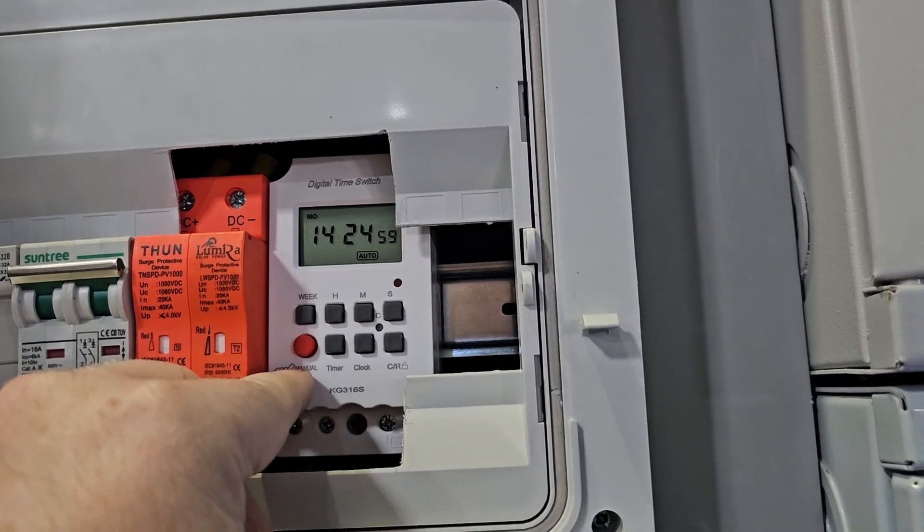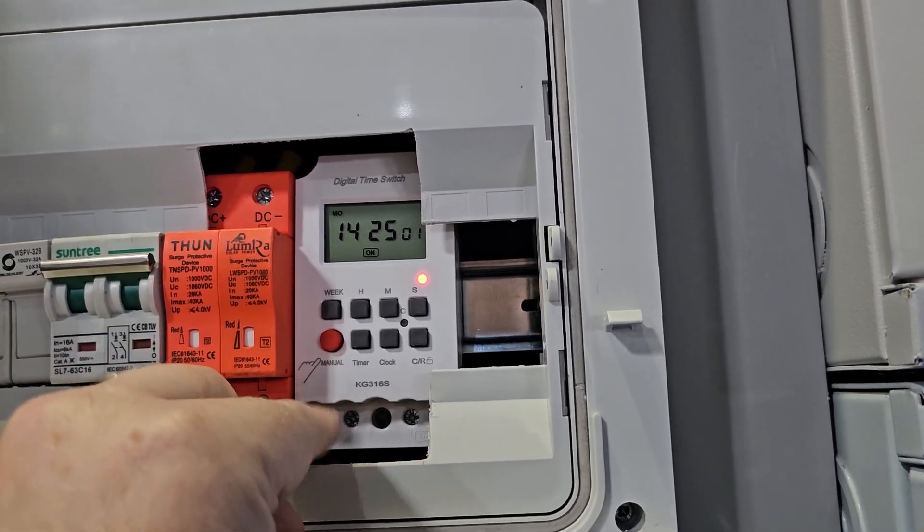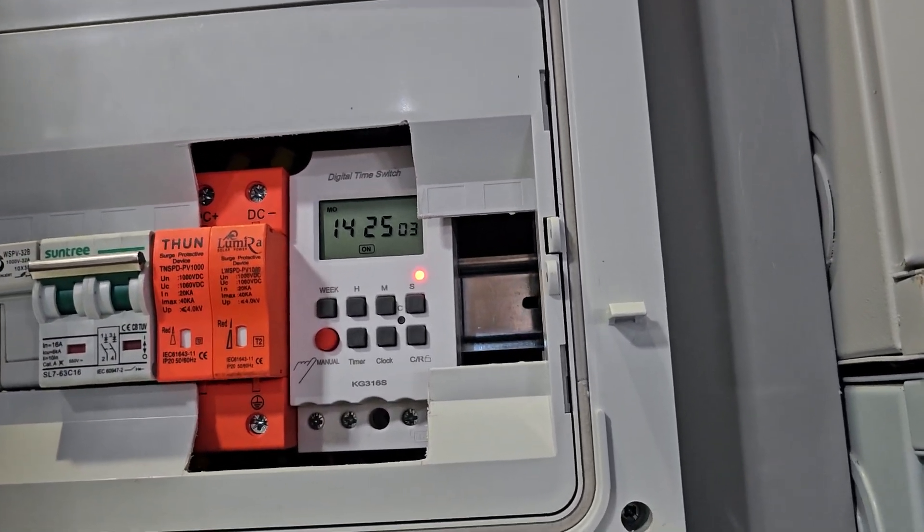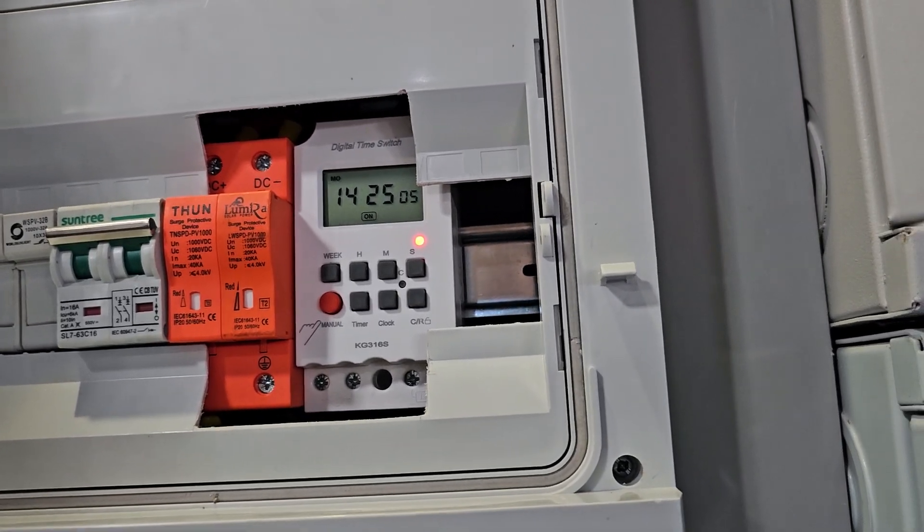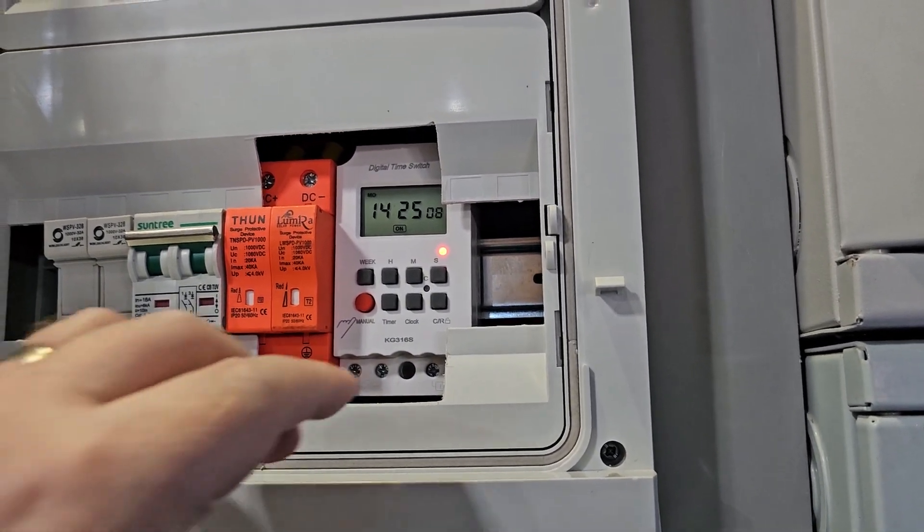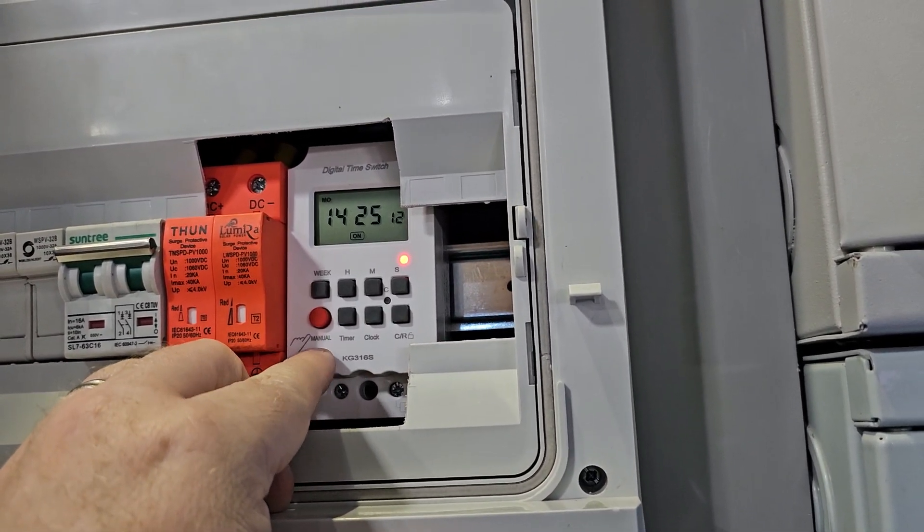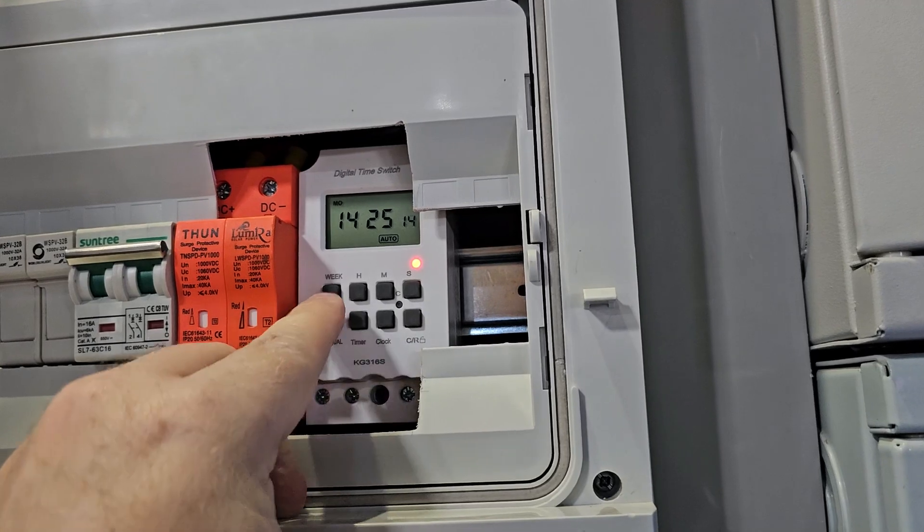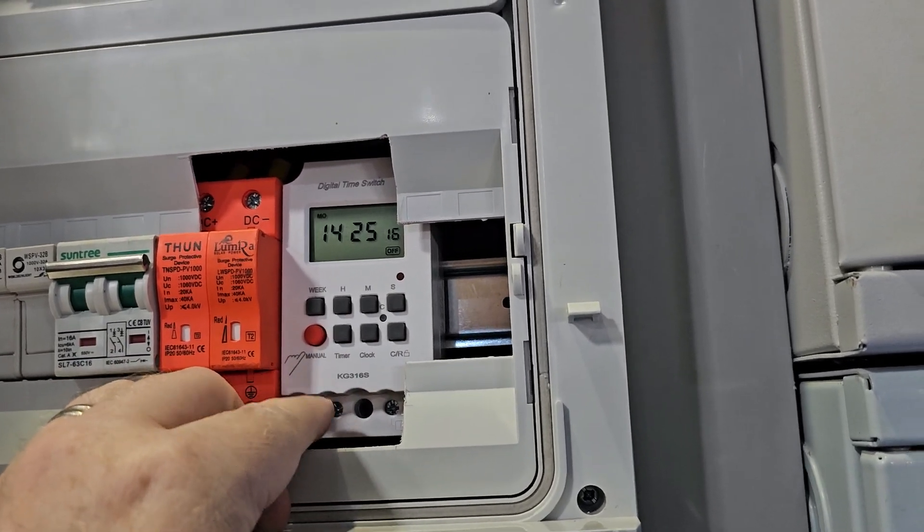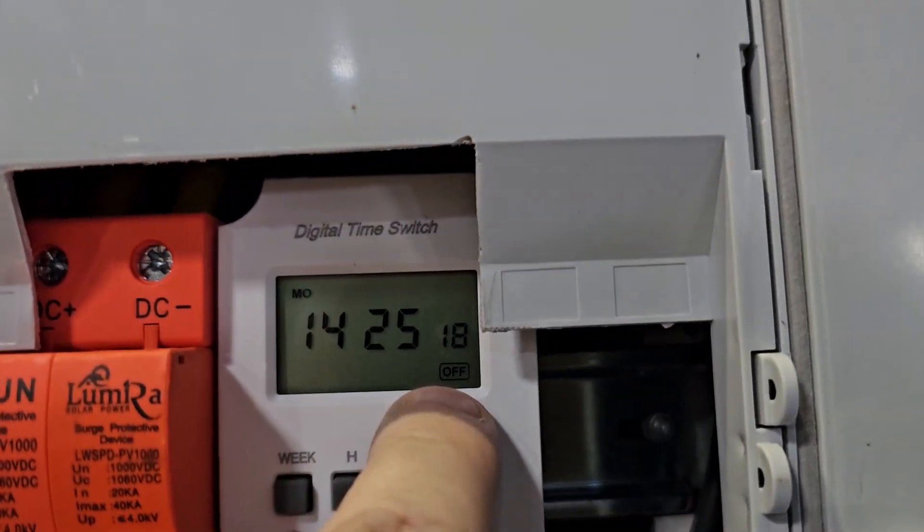I'll show you the easiest thing to do first. You can just do like that, and now the circuit is closed, and electricity goes to the tank. So if I want to do it manually, I can do that too. So now if I want to turn it off, I just press it two times, and that's it.